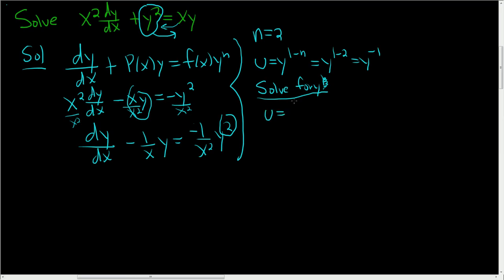Multiply by y, divide by u. So y is equal to 1 over u. Now take the derivative dy/dx. The derivative of 1 over u is negative 1 over u² and then chain rule du/dx.